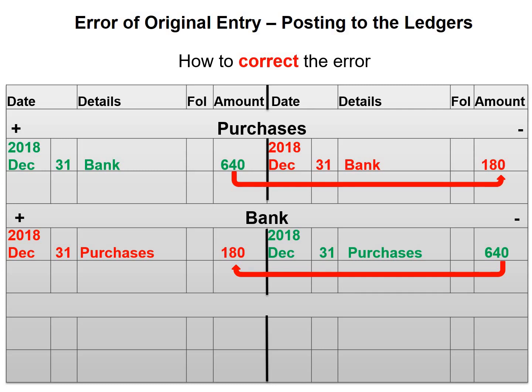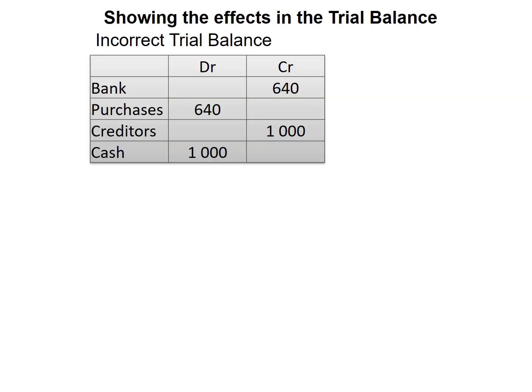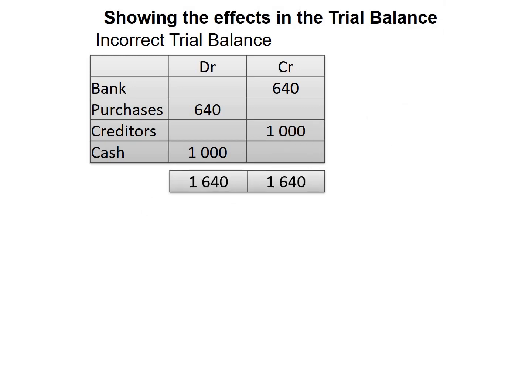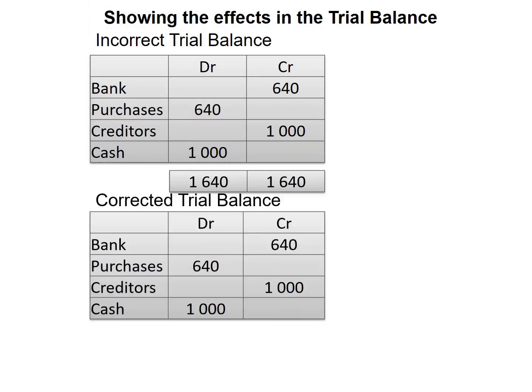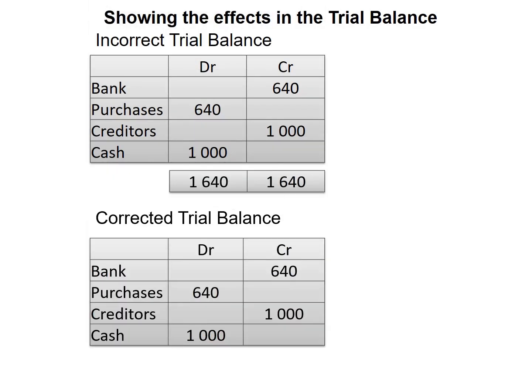Let's have a look at how this will affect our trial balance. In our incorrect trial balance, we have a bank balance of $640 on the credit side and a balance of $640 for purchases on the debit side. And even though this error was not corrected, our trial balance still balances.